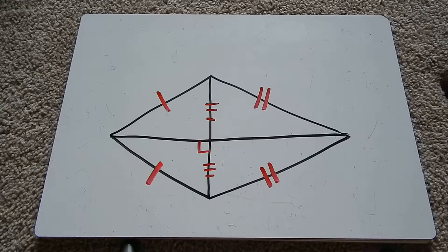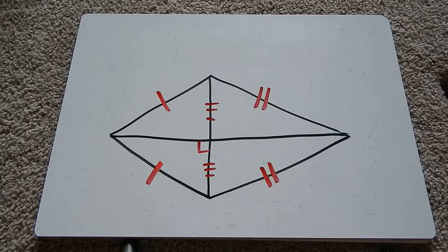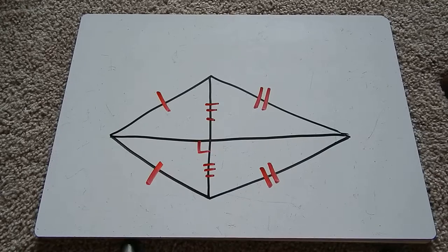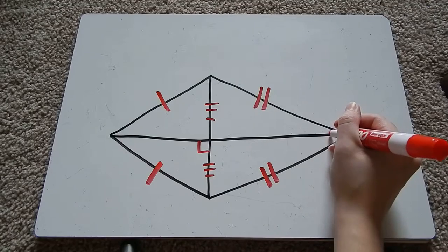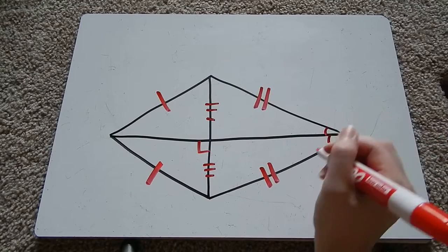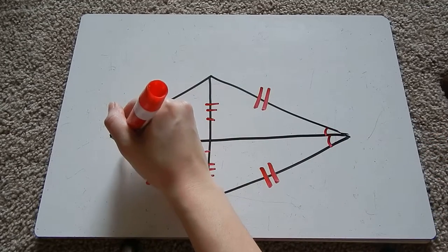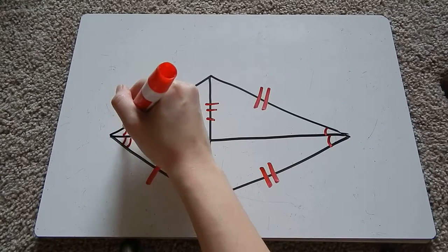And the diagonals bisect the angles. So this diagonal is going to bisect this angle, which means it's going to cut it in half. So this angle will be congruent to that one. This angle will be congruent to this one.